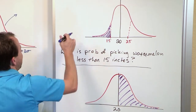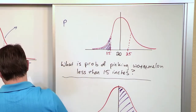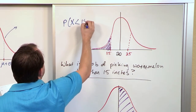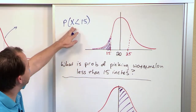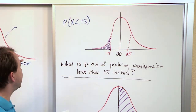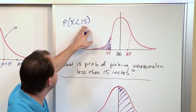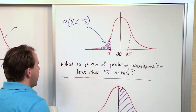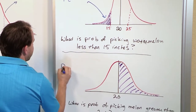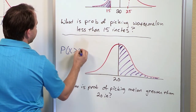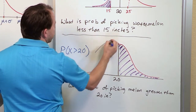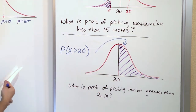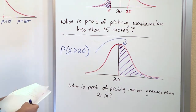The way you write the first problem mathematically is: the probability that random variable x is less than 15. Remember, random variable means you pull a watermelon — what's the probability it's less than 15? That shaded area is the answer. For the second problem, you write: the probability that random variable x is greater than 20, which equals this shaded area. We will compute these shaded areas in a little bit.